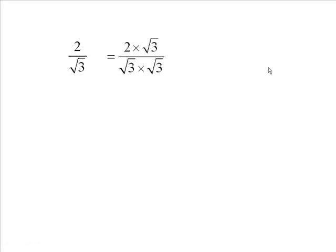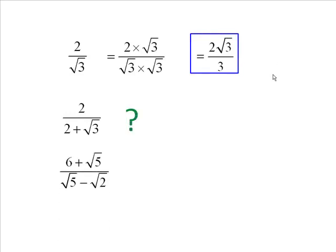We saw that if you just multiply that by itself, the denominator, you square it and then rationalize it that way. But what happens if you've got a more complicated denominator like this or like this? Well, that's the subject of this little clip.